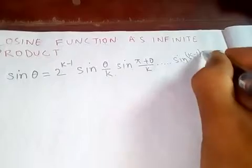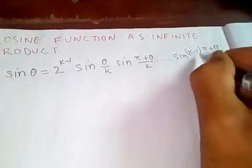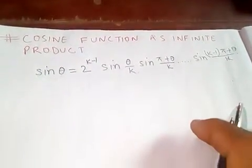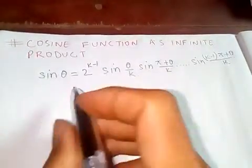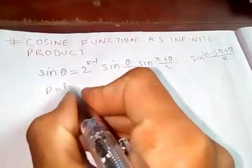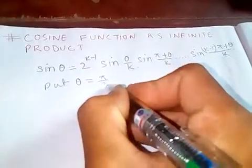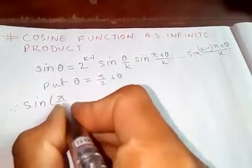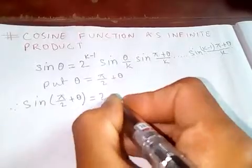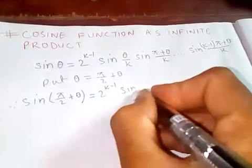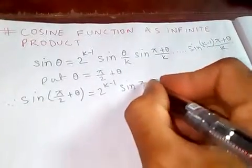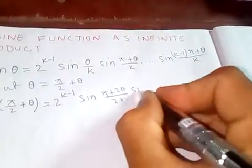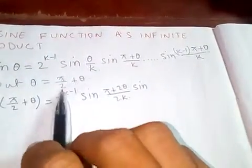Now in order to get cosine, let's put theta equal to pi over 2 plus theta. Therefore what we get is sine of pi over 2 plus theta, which is equal to 2 to the k minus 1 times sine — if you put pi over 2 plus theta, that means pi plus 2 theta over 2k.